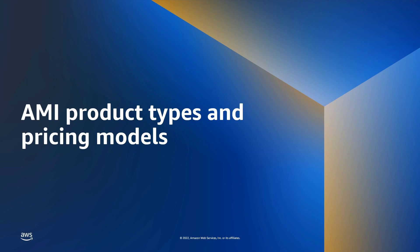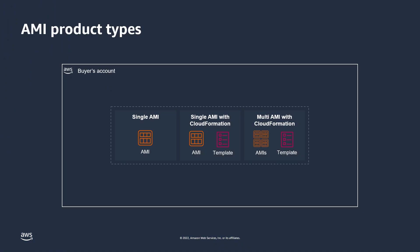Let's review the AMI product types and pricing models. You can deliver your AMI-based product in one of three ways: as a single AMI, a single AMI with a CloudFormation template, or as a multi-AMI with a CloudFormation template.